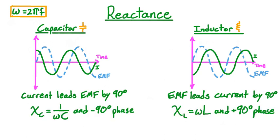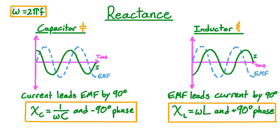So we can write full expressions for the capacitive and inductive reactances as the size of the reactance and the phase shift. When we say that the phase of the capacitive reactance is negative 90 degrees, what we really mean is that the phase shift is backward relative to the EMF, as opposed to the inductive phase shift, which is positive or forward relative to the EMF. Like resistance, reactance is meant to provide a connection between the EMF and the associated current. However, unlike resistance, reactance also introduces a phase shift. The size of the reactance behaves just like the resistance in terms of relating the maximum current to the maximum EMF. For example, the maximum EMF through the inductor is omega L times the maximum current. However, these two maxima don't occur at the same time — this is precisely the information carried in the phase portion of the reactance.